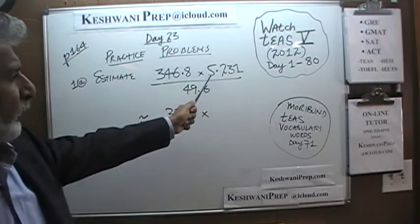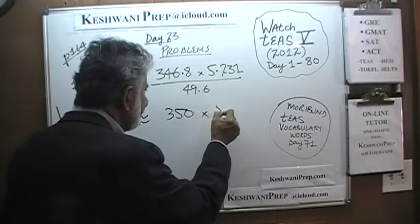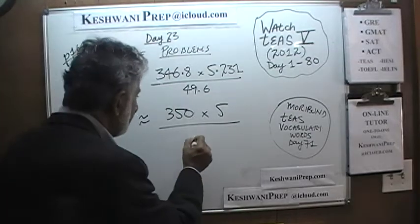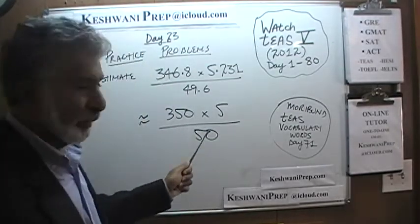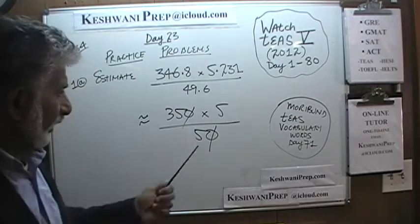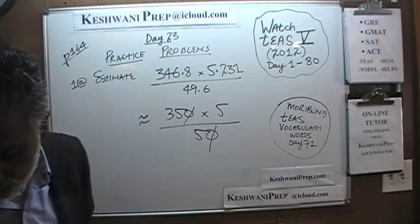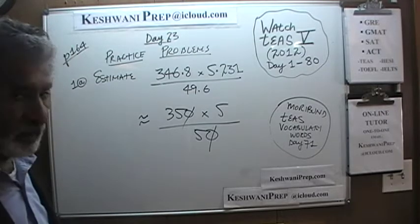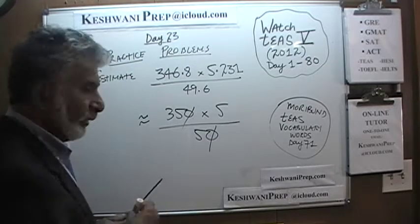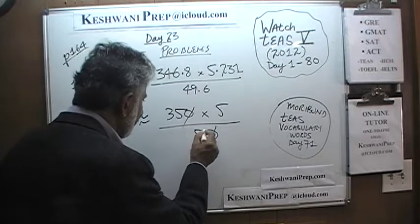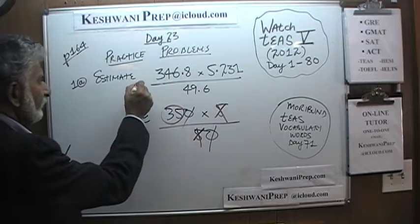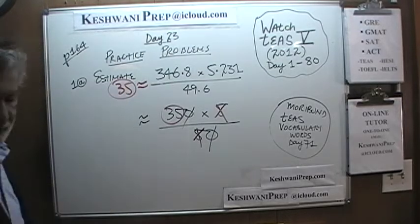Then we have 5.231 — let's just say about 5. And at the bottom we have 49.6 — that's about 50. Let's divide top and bottom by 10; the zero is going to drop out. Then let's divide top and bottom by 5 again — this 5 is going to drop out, and we are left with 35. So the approximate value of this quantity is 35. That's the estimation.